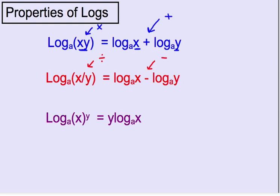The last property is when you have a power. Notice that the power is the exponent on the argument. What you can do is bring it down in front, so now it becomes a multiplier in front of the logarithm.